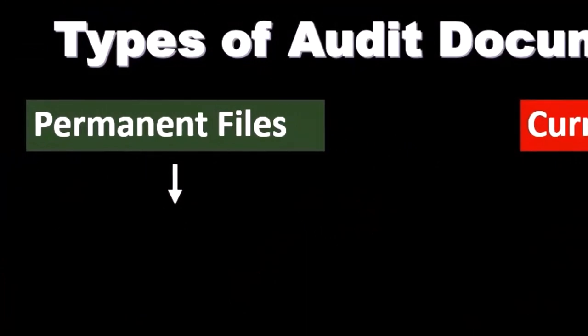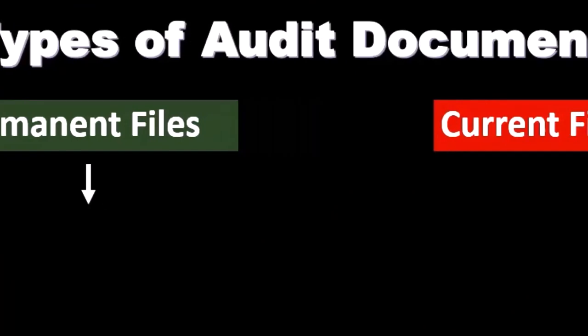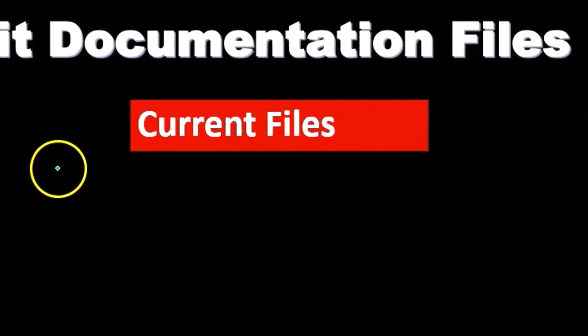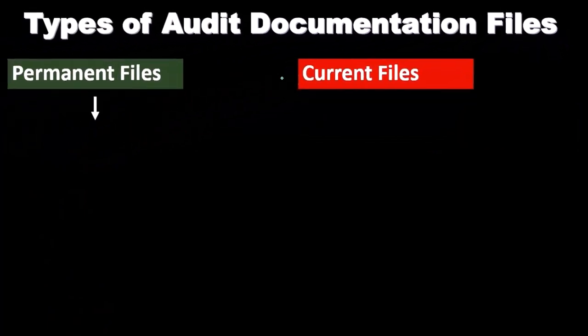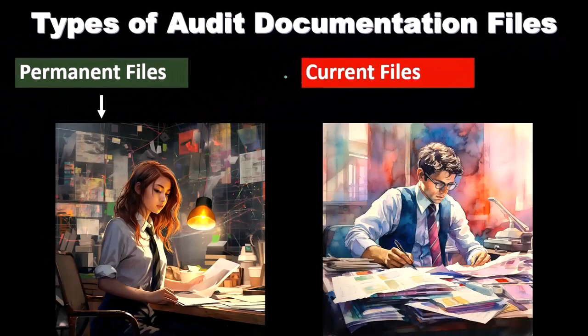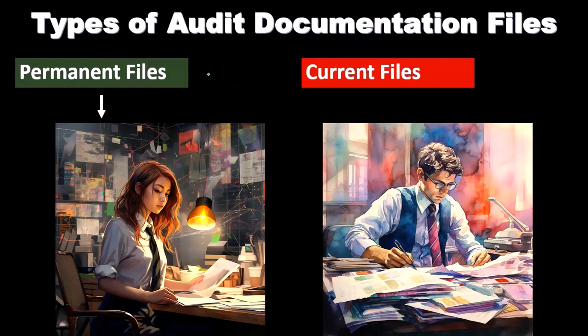When we store our audit documentation, we're typically going to have a client file, and oftentimes it'll be grouped into two types: a permanent file and a current file. The current file is going to contain the current information we're working on — the current year audit. The permanent file will have the type of information that's going to be there for long periods of time.